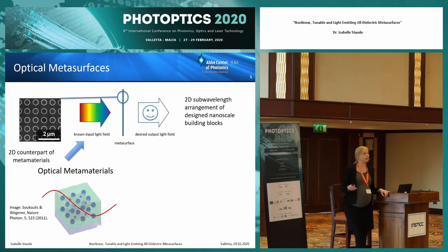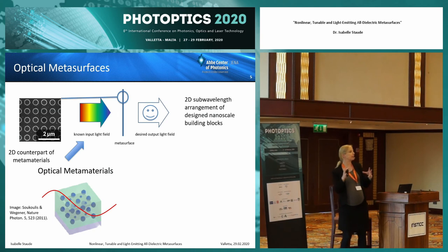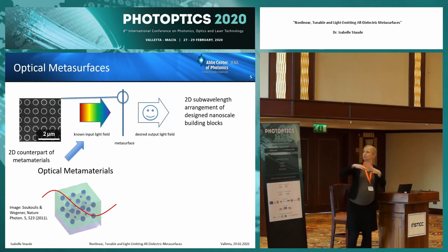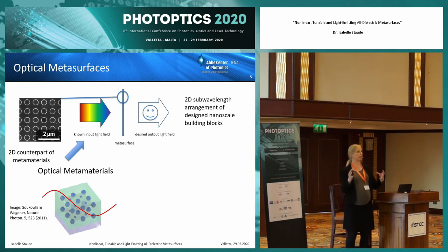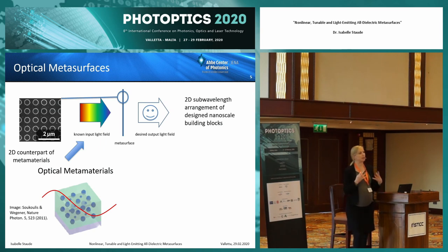We can approach the concept of the optical metasurface from two directions. One is coming from the direction of optical metamaterials — bulk metamaterials where the designed building blocks were arranged in three dimensions. The light wave averages over all of these building blocks because they are arranged on a sub-wavelength scale, so it sees some effective properties, and these can be engineered by the arrangement and by the properties of the individual building blocks.